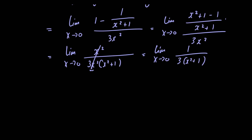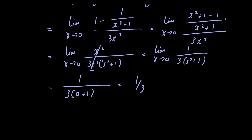At this point we can go ahead and just plug in x equals 0. In doing so we have 1 over 3 multiplied by 0 plus 1, and this is just equal to 1 over 3, which is the final answer to this problem.